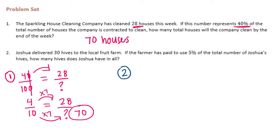Number 2: Joshua delivered 30 hives to the local fruit farm. If the farmer has paid to use 5% of the total number of Joshua's hives, how many hives does Joshua have in all? He delivered 30 hives and that represented 5% of the total, so 5 out of 100 equals 30 out of the total number of hives.